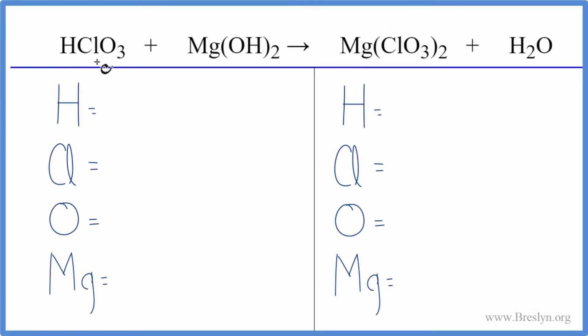To balance the equation HClO3 plus Mg(OH)2, let's count the atoms up on both sides and let's be real careful because it's easy to miscount the oxygens and hydrogens.